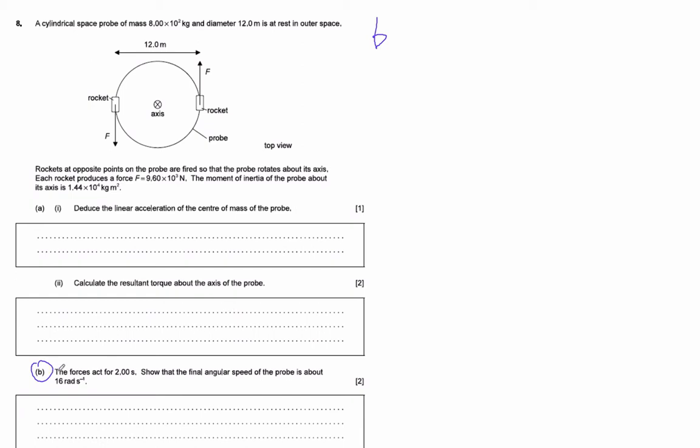Let's look at part d here. So the forces act for two seconds, show that the final angular speed, this is our omega, is around 16 radians per second.